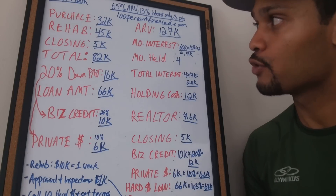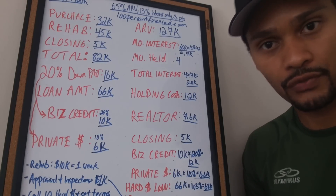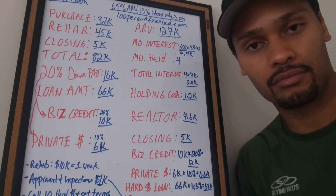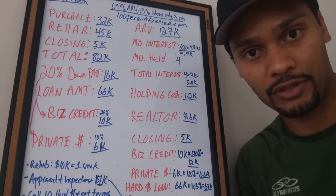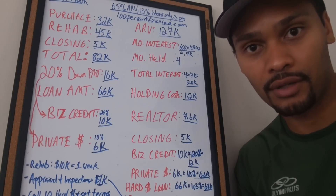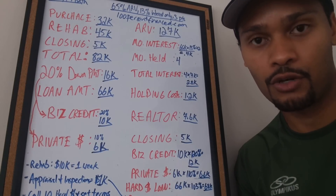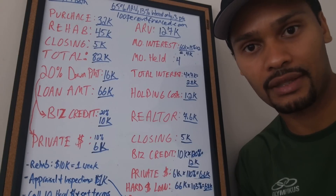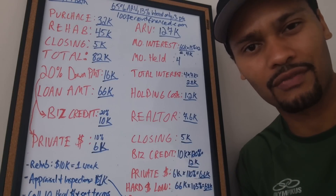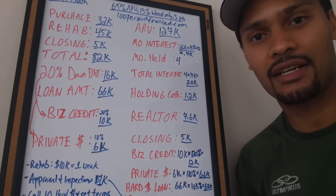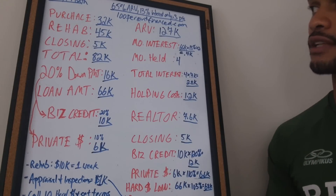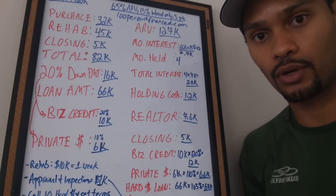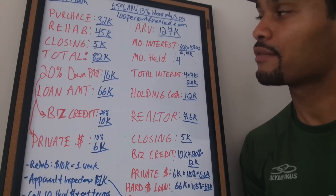You add an additional $7,000 as an 'oops factor' — a contingency reserve — in case something unforeseen happens. You might open a wall and find the electrical needs updating, or the plumbing, or the HVAC needs full replacement, or there's a crack in the foundation. So you add that contingency. That means you're buying it for $32,000 and putting $45,000 worth of work into it.